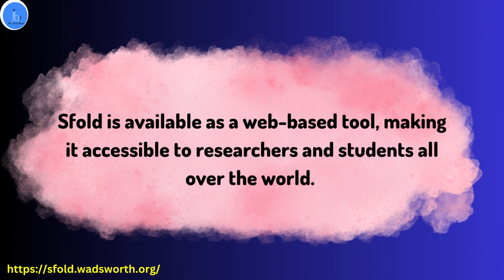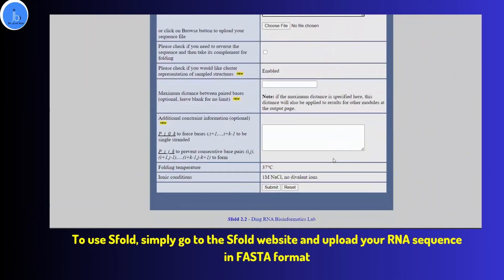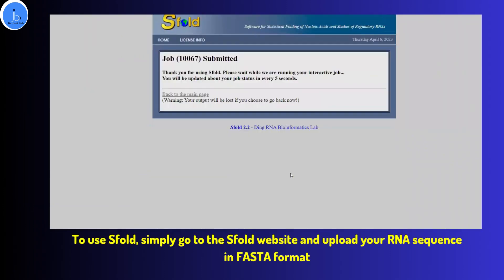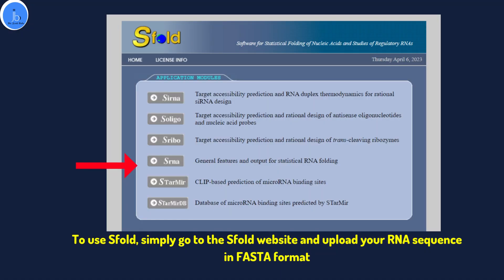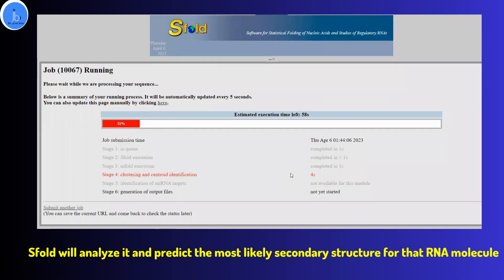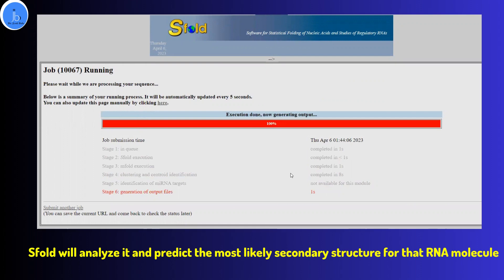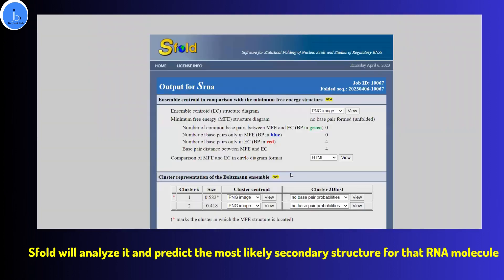To use S4, simply go to the S4 website, upload your RNA sequences in FASTA format. Please remember that S4 has multiple subsections for different tools and different analyses. Very specifically in S4 you have to go to sRNA. Once you have uploaded your sequences, S4 will analyze them and predict the most likely secondary structure. This is the kind of result you will be going to get.